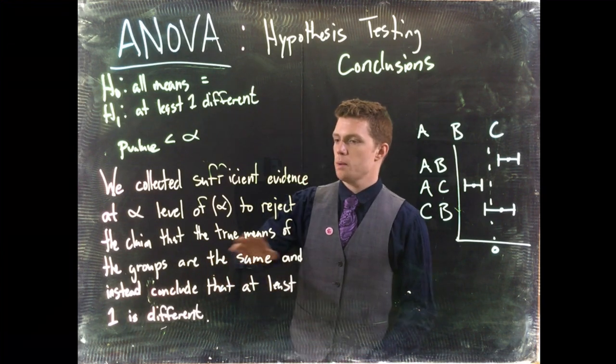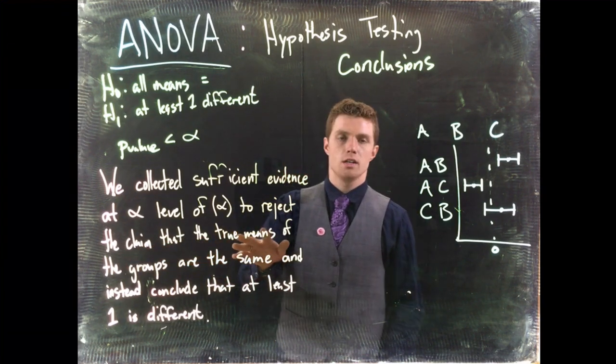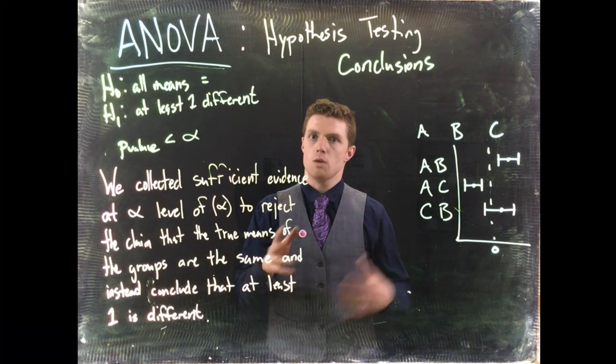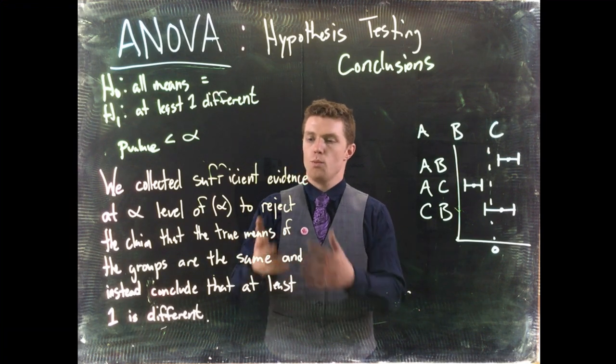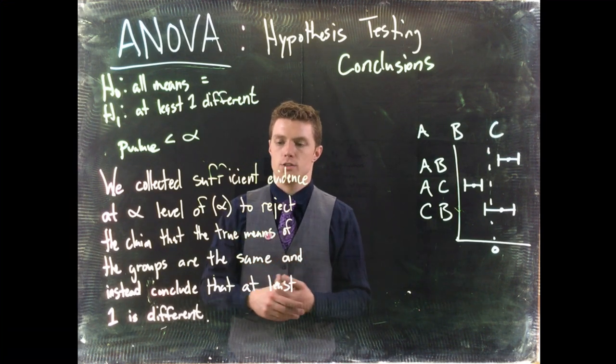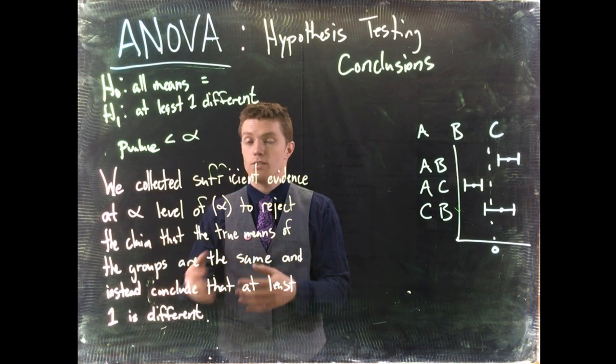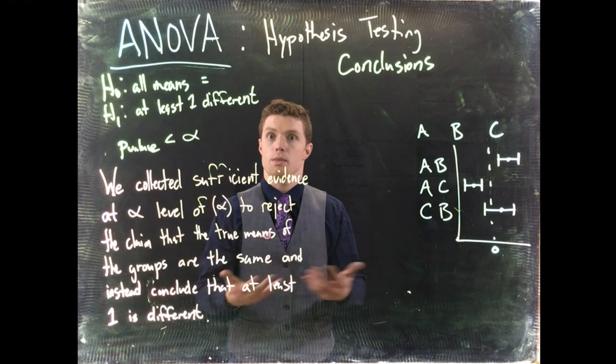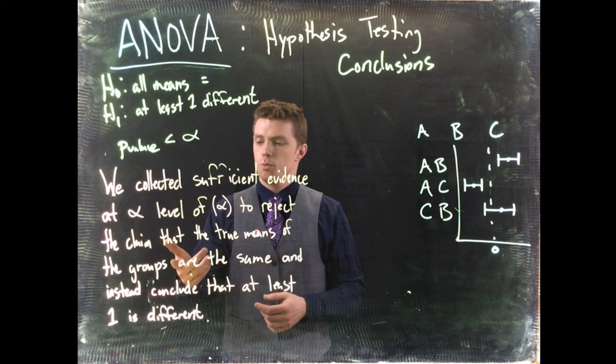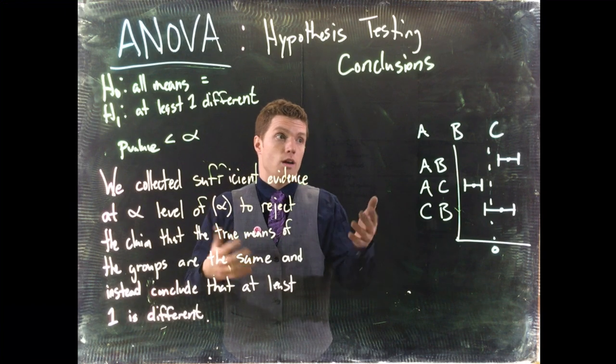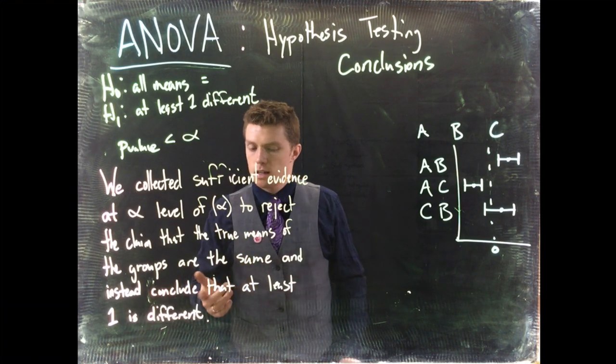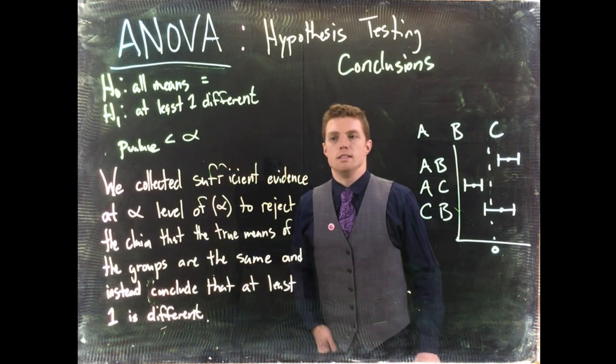Now, the null hypothesis is the claim that the true means—whether that's true mean weight, true mean time, whatever parameter we're measuring—of the populations are equal. Make sure to state the populations since we're comparing multiple groups. Be sure to state your groups, whatever they are, and then conclude whether they're the same or at least one is different.